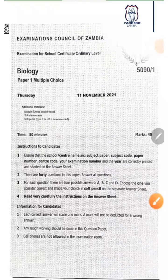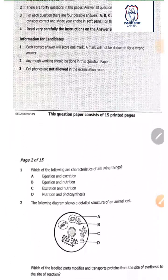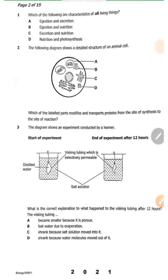Okay, so let us look at some questions from Biology 2021 School Certificate Paper One. I'll scroll down to where it says green one: Which of the following are characteristics of all living organisms?